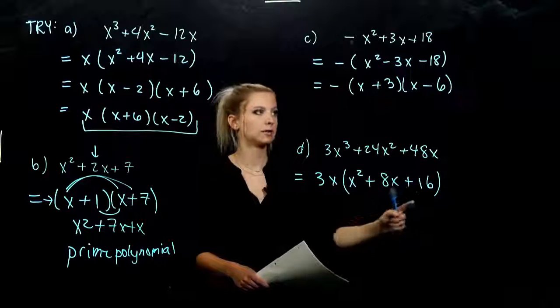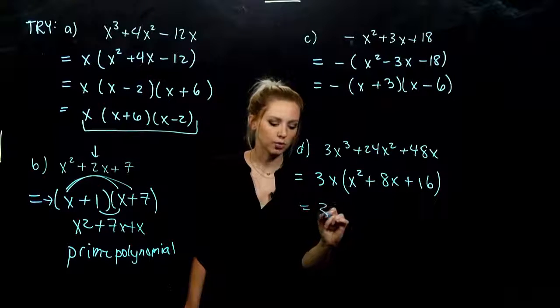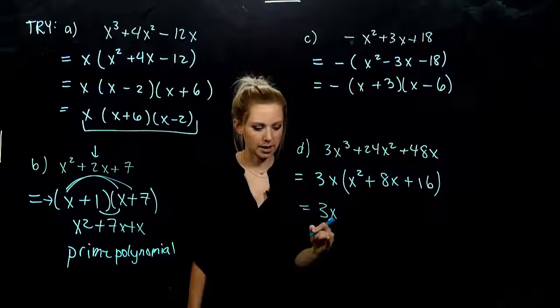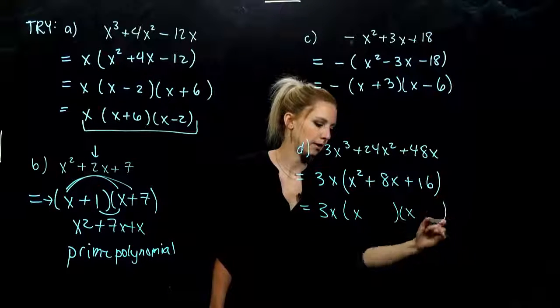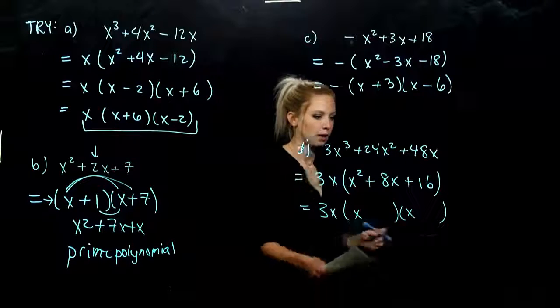So now we can handle these. And don't forget to keep writing out the greatest common factor. We know it's a 1. So it's going to be an x and an x.